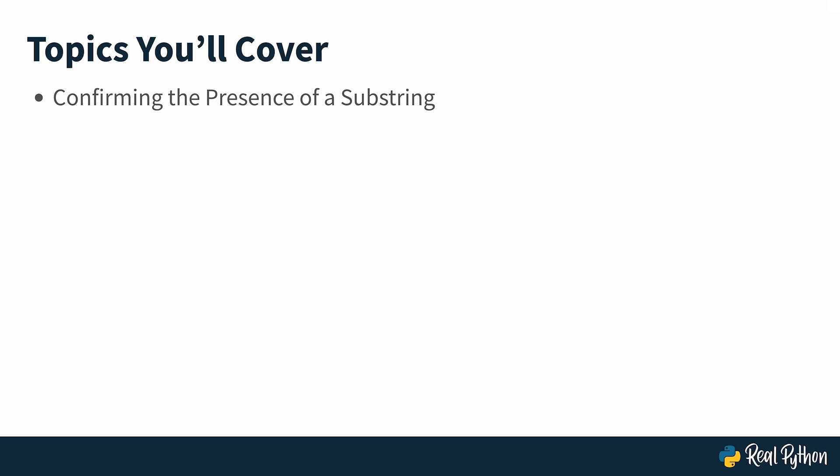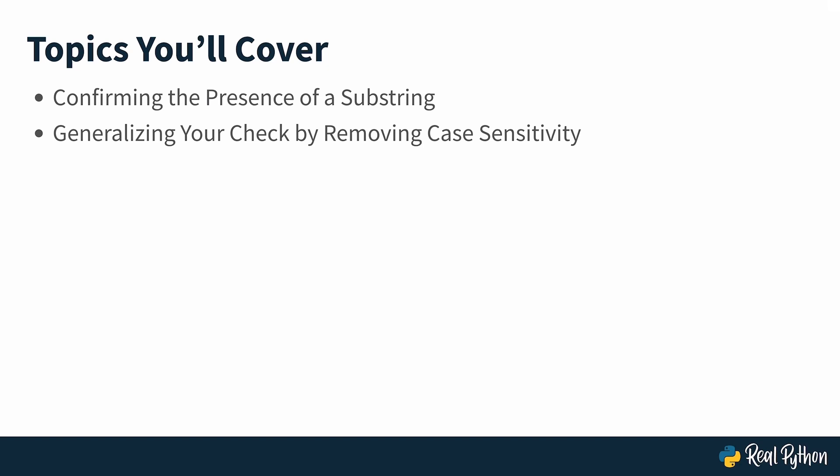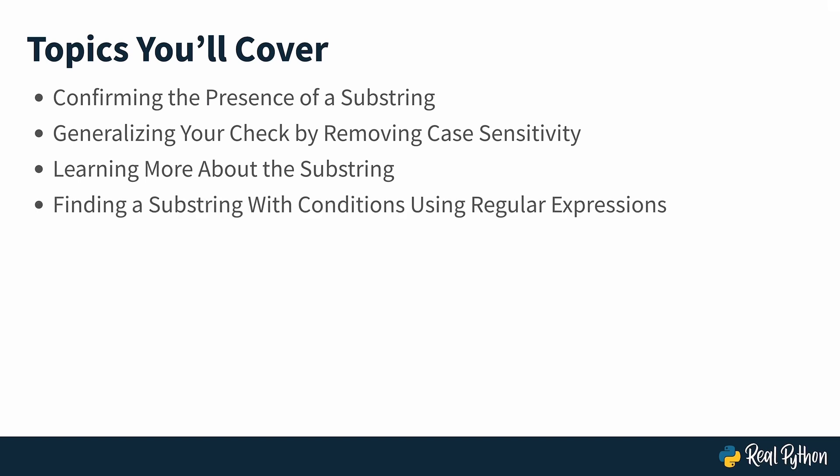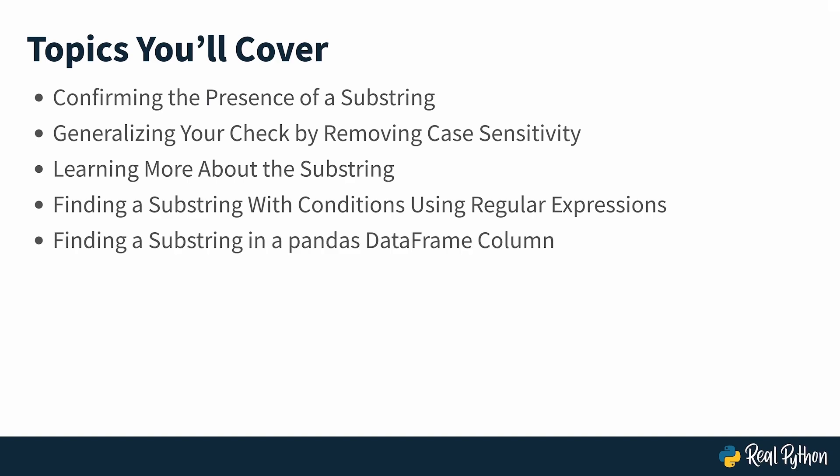This is just confirming the presence of a substring, and that's quite quick and easy. I'll show you the most Pythonic way to do that. But in good real Python fashion, we'll dive much deeper than that. I'm going to show you how you can generalize the check by removing case sensitivity from your string, and also give you a bit of context on why that is important. Then you'll learn about a few string methods that you can use to figure out more about the substring, such as where it's located in your text and also how many of those substrings exist. Then I'll show you some more advanced ways of matching substrings using regular expressions — situations where you might need to apply more elaborate conditions. And finally, you'll also take a look at how you can find a substring in a pandas DataFrame column, which is going to be a different approach than the ones shown before, because you want to do things the way that pandas suggests.